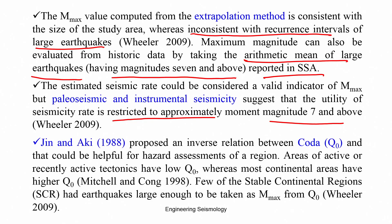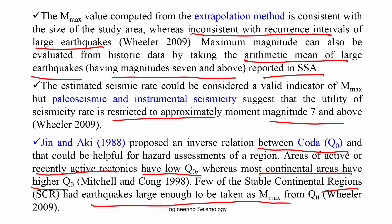Gupta and Aki proposed an inverse relation between the coda wave quality factor Q-naught and hazard assessment. Active tectonic regions have low Q-naught whereas stable continental regions have higher Q-naught. The Mmax can be related to Q-naught depending on the seismotectonic region type. However, the Q-naught-based approach may not be universally adopted because different Q-naught values apply to different seismotectonic settings — active, continental, or stable continental regions.